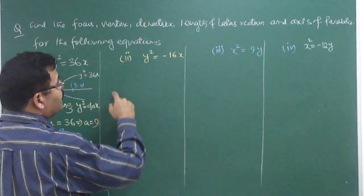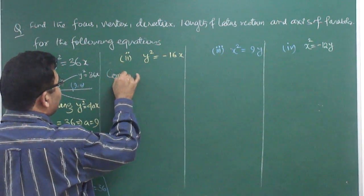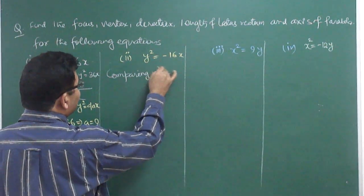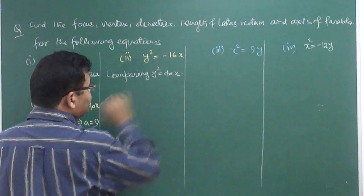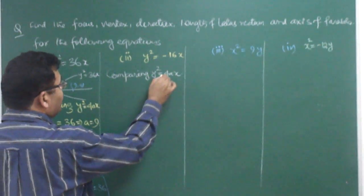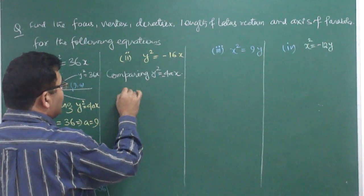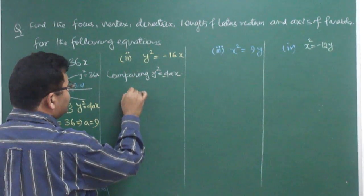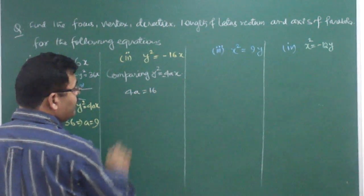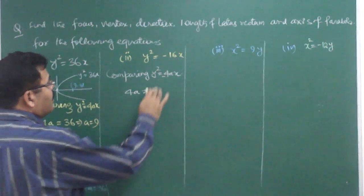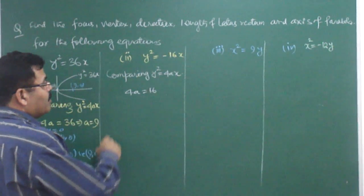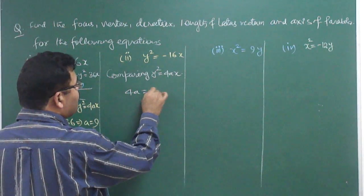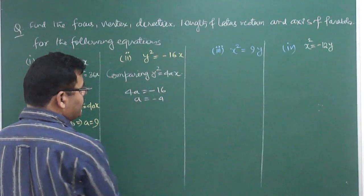For y² = −16x, comparing with y² = 4ax, we have 4a = −16, so a = −4. You only need to remember one equation: y² = 4ax. Then the focus is (a, 0), which becomes (−4, 0).